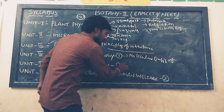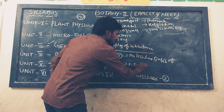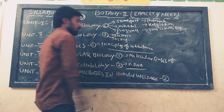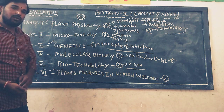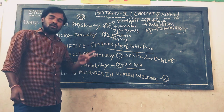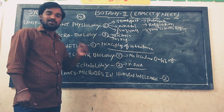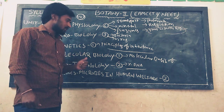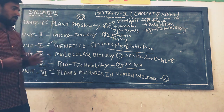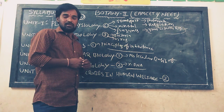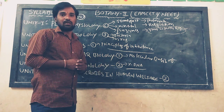The fifth unit is biotechnology, a recent branch of biology. In this unit, which contains two chapters, we will discuss the recombinant DNA (rDNA) technology process. The first chapter covers the processes and principles of biotechnology, and the second chapter covers applications of biotechnology.